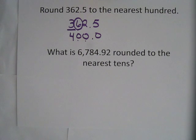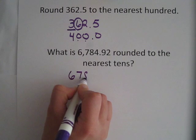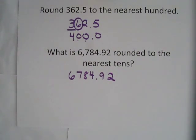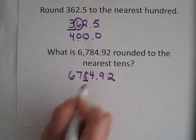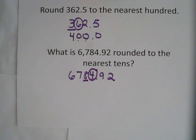Then it says, what is 6,784 and 92 hundredths rounded to the nearest tens place? So again, I underline the number in the tens place. I circle the number that's to the right of that.